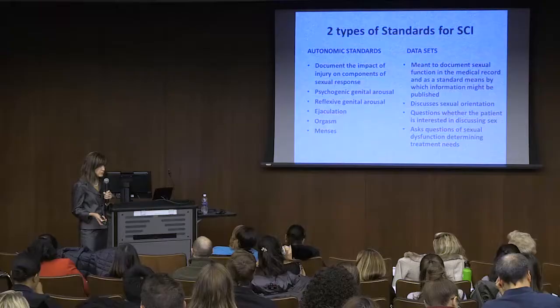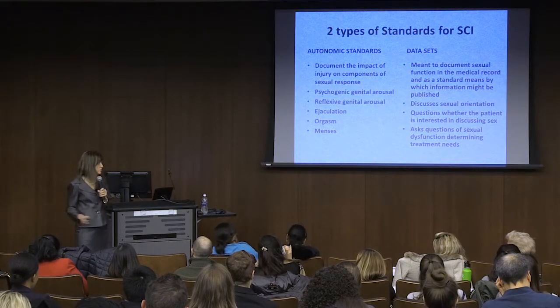We use the autonomic standards as a way to talk about what's going on with the person. There's another aspect we can use: the data sets. Data sets are available for not just sexual function, but for many different functions in spinal cord injury. I led the data sets for sexual function, and this is a way to document what's going on with the person with a spinal cord injury if you're treating them in an ongoing fashion—you can put it in Epic or whatever system you use.